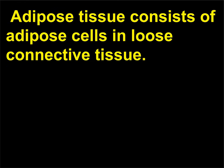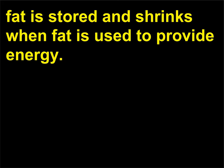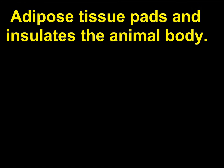Adipose tissue consists of adipose cells in loose connective tissue. Each adipose cell stores a large droplet of fat that swells when fat is stored and shrinks when fat is used to provide energy. Adipose tissue pads and insulates the animal body.